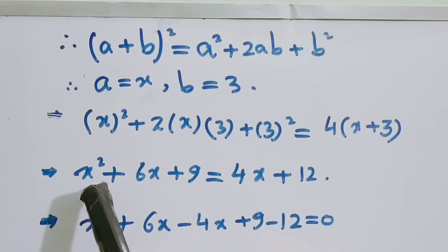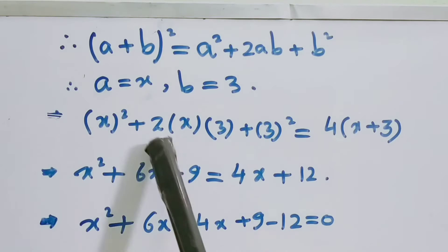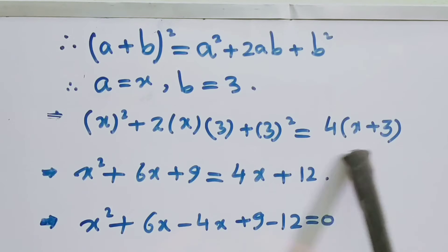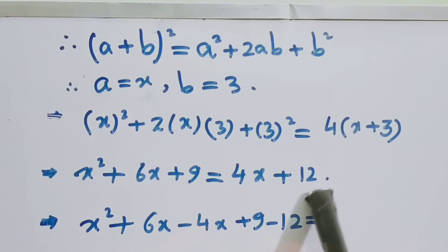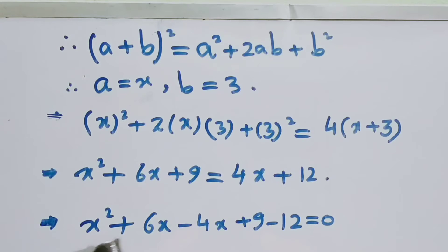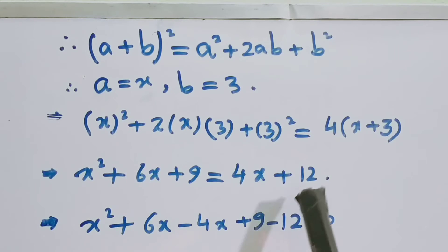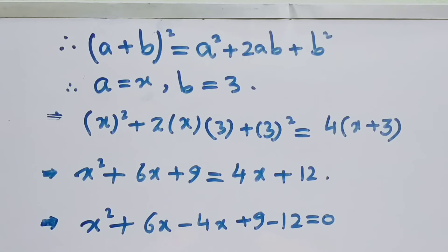Further simplification: x² + 6x + 9 equals 4x + 12. Shifting 4x to the left-hand side gives minus 4x. So x² + 6x − 4x + 9 − 12 = 0, which gives x² + 2x − 3 = 0. We have finally arrived at a quadratic equation.